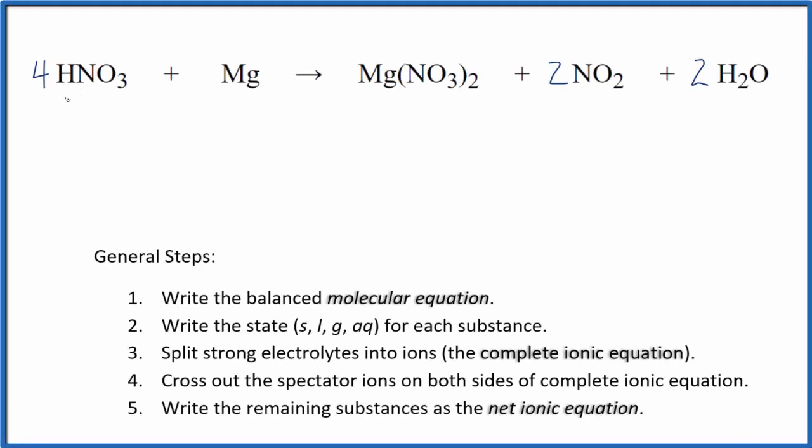Let's write the balanced net ionic equation for nitric acid plus magnesium. That's HNO3 plus Mg. We should note that our nitric acid here is concentrated. That's why we end up with these particular products. If it was dilute, it would be a little bit different.